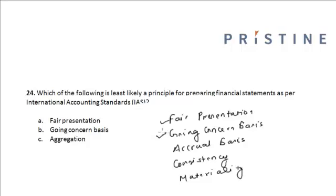The going concern basis is an assumption that the firm will continue to exist unless its management intends to liquidate it. The accrual basis is different from the cash basis. Consistency means that how items are presented and classified should be consistent between periods.